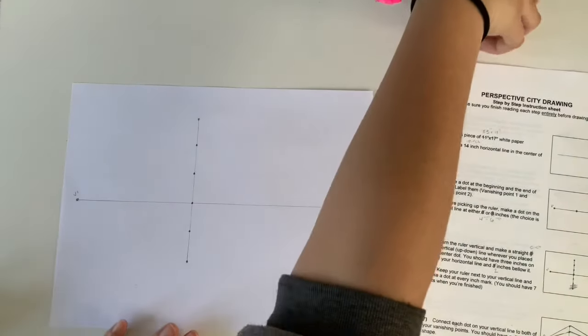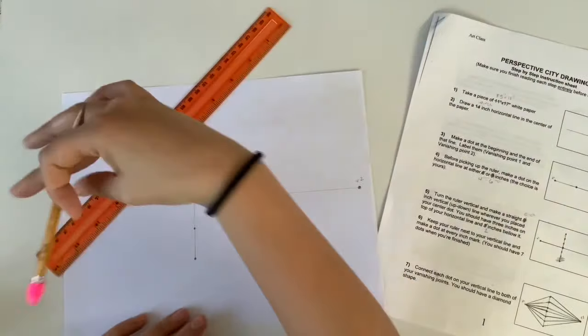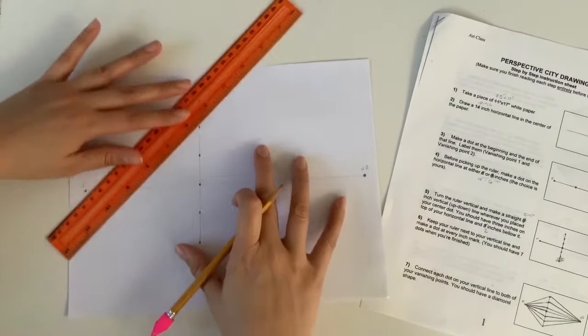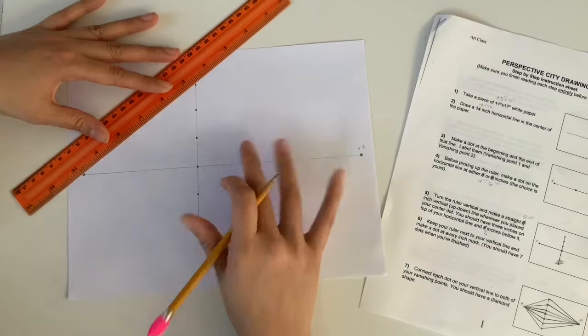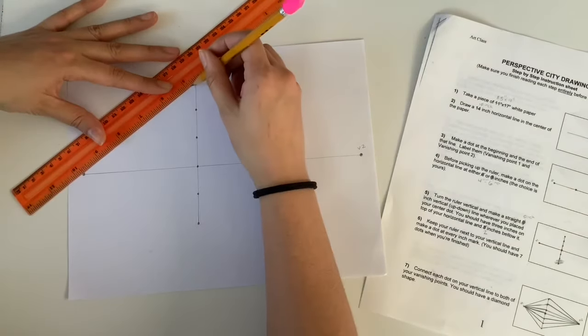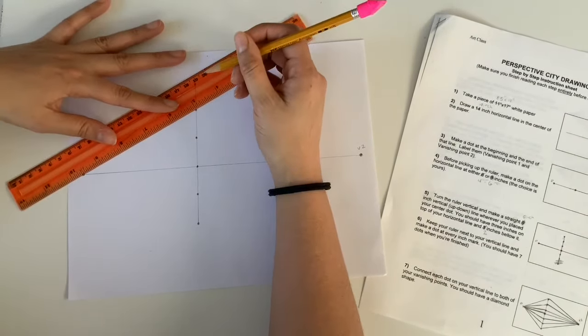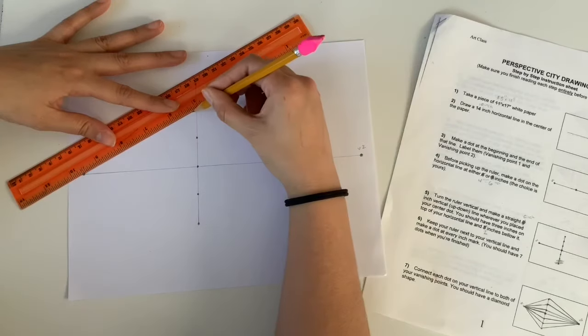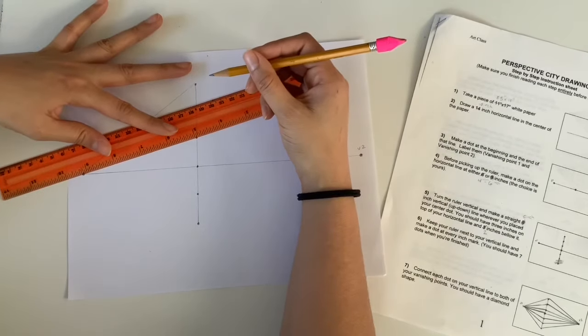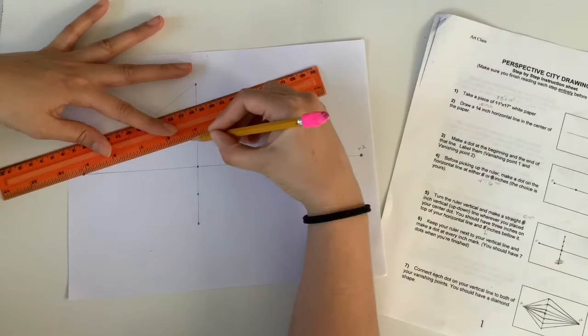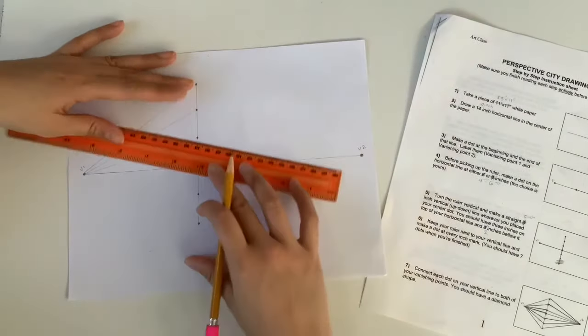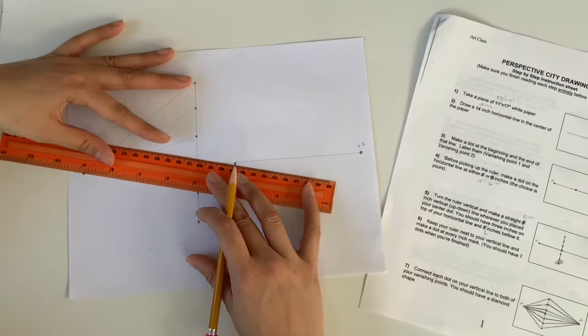My next step is using my ruler to attach all of these dots I just created to my vanishing points. So I'm going to start with vanishing point one which is on the left and I'm going to attach it to the top dot, the second dot, and I'm going to continue my way down until all of these dots are attached. My center line is already connected because that's the line that we started with.